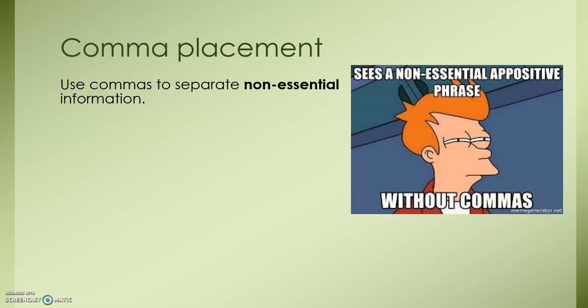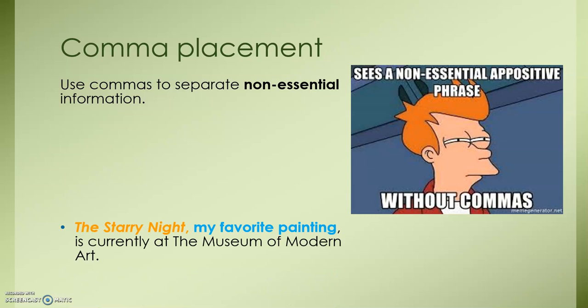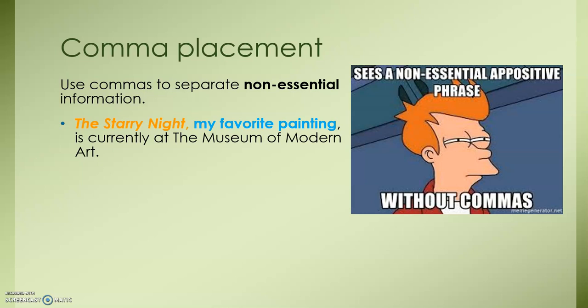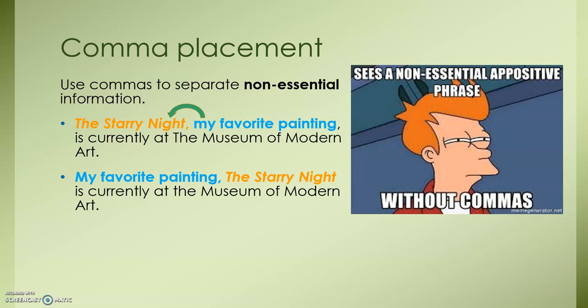You can use commas in various parts of the sentence to set off an appositive, as long as you have non-essential information. Here we have: 'The Starry Night, my favorite painting, is currently at the Museum of Modern Art.' Our appositive phrase, 'my favorite painting,' is in the middle, describing The Starry Night. Notice we can take out that blue phrase and still have enough information to know which painting we're speaking about. Moving the appositive to the beginning: 'My favorite painting, the Starry Night, is currently at the Museum of Modern Art.' Notice there is one comma because our appositive phrase is 'my favorite painting.' We are not framing 'the Starry Night' with commas — that is the noun being described and that is the essential information for the sentence.